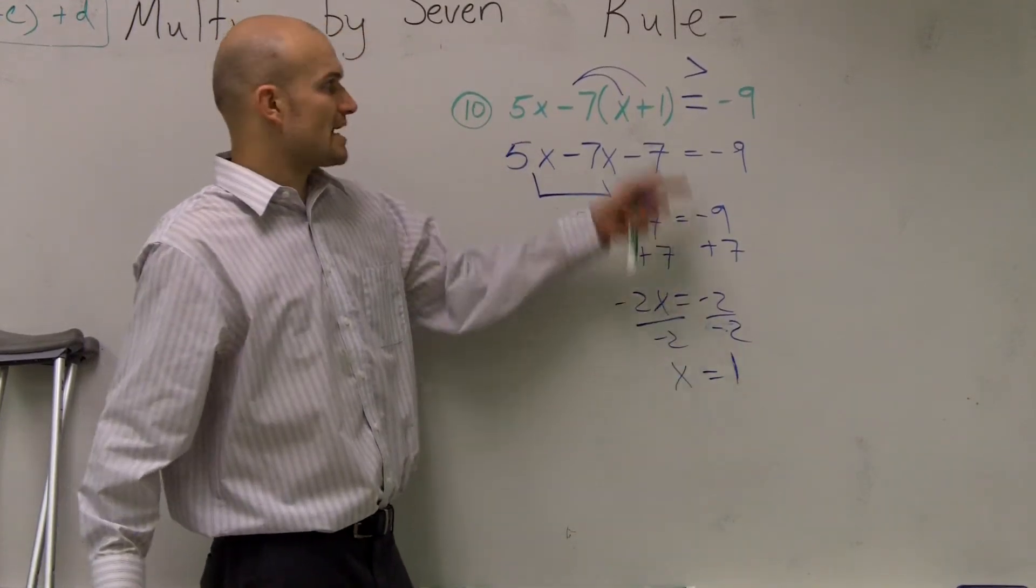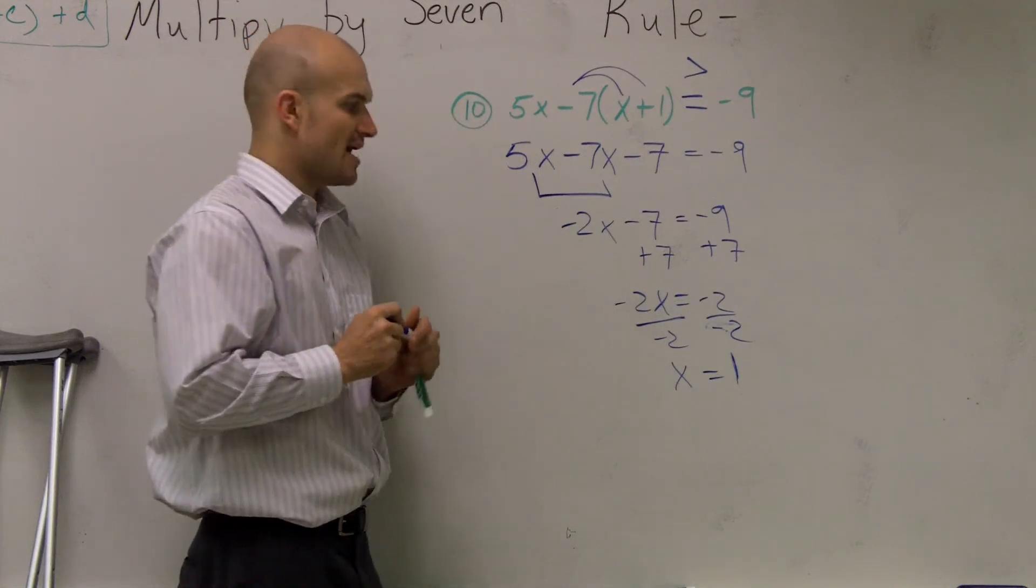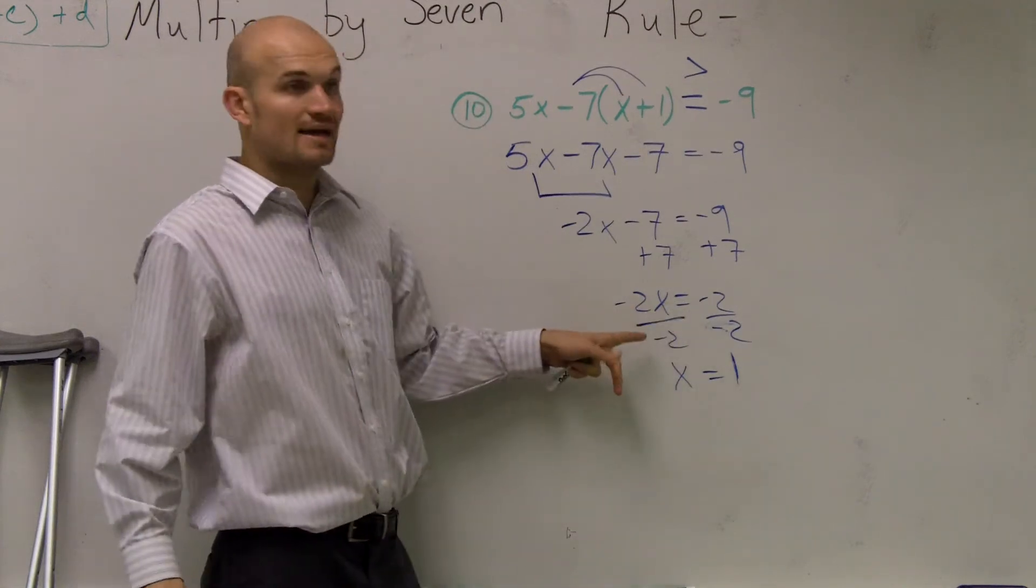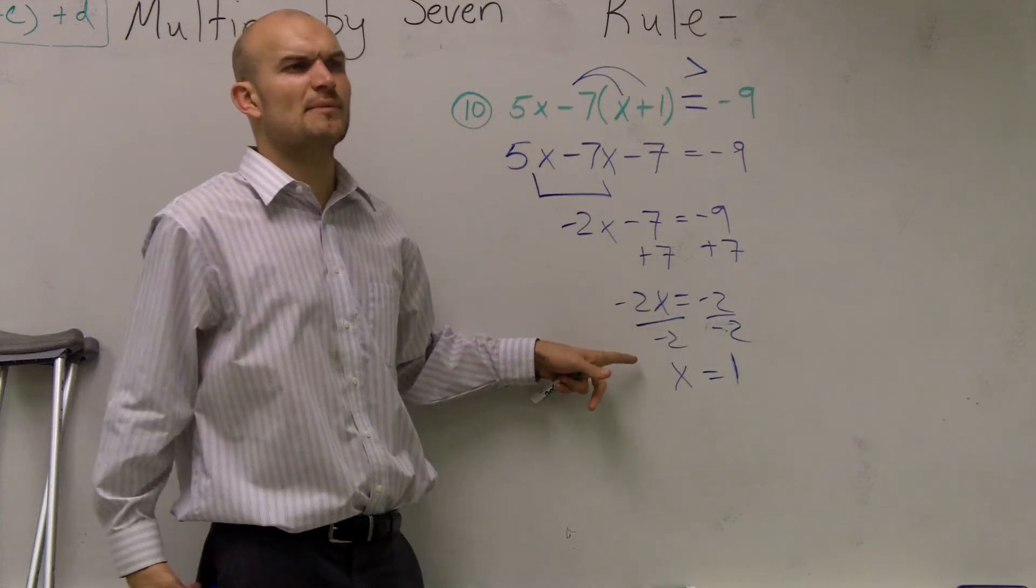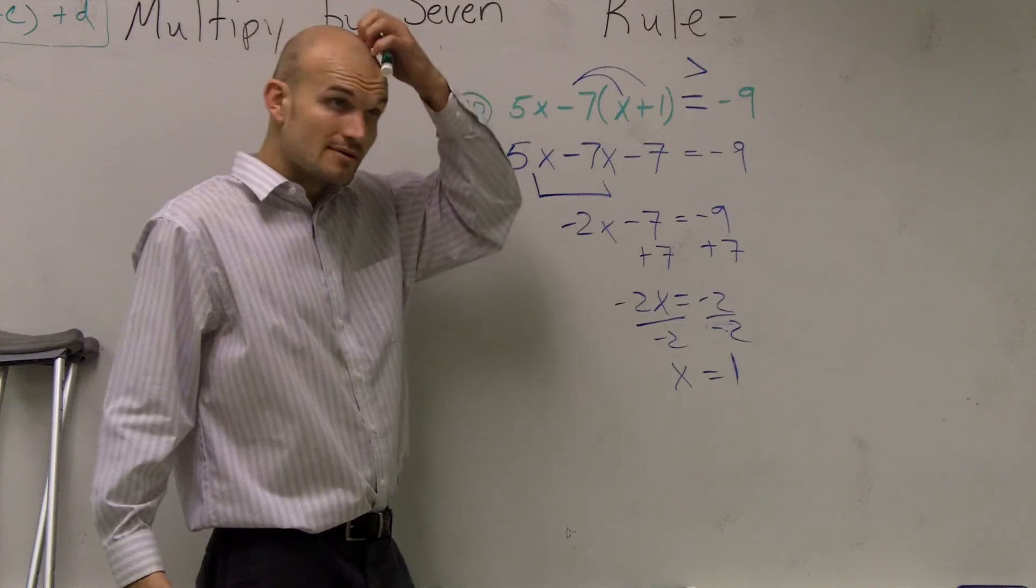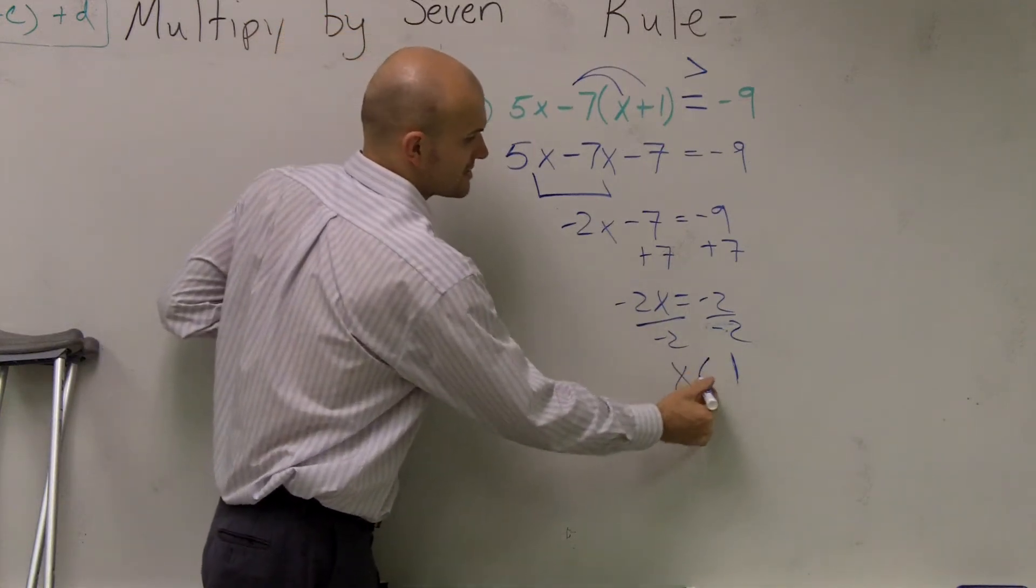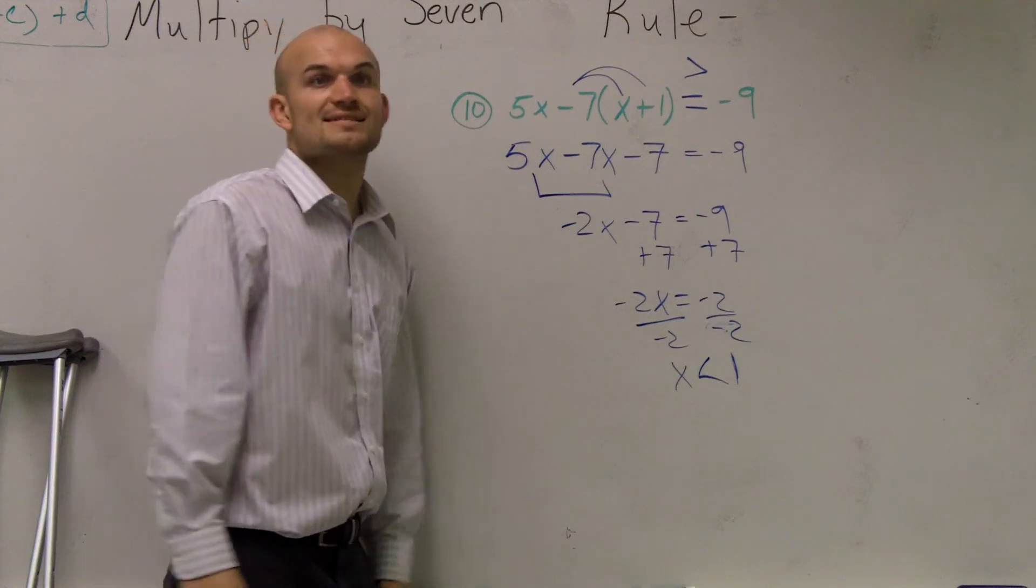So then I need to plug back in my sign. However, Chiara, what I noticed was that I divided by a negative 2, right? So you do remember what happens when you divide by a negative number? You do what? You flip the sign. You flip the sign, right? Good. You guys are remembering some things. So therefore, now it's x is less than 1.